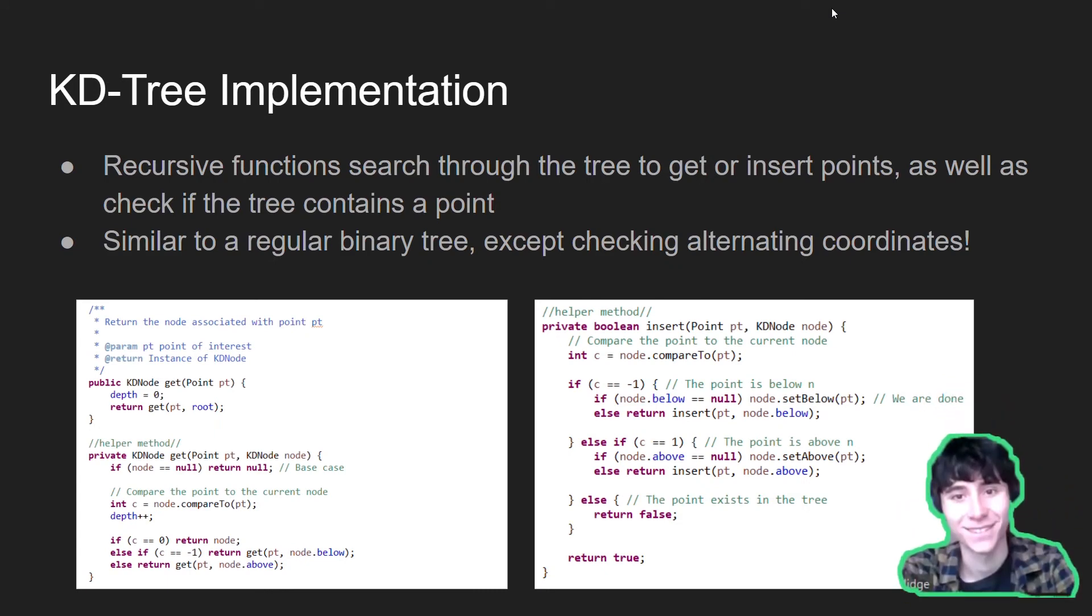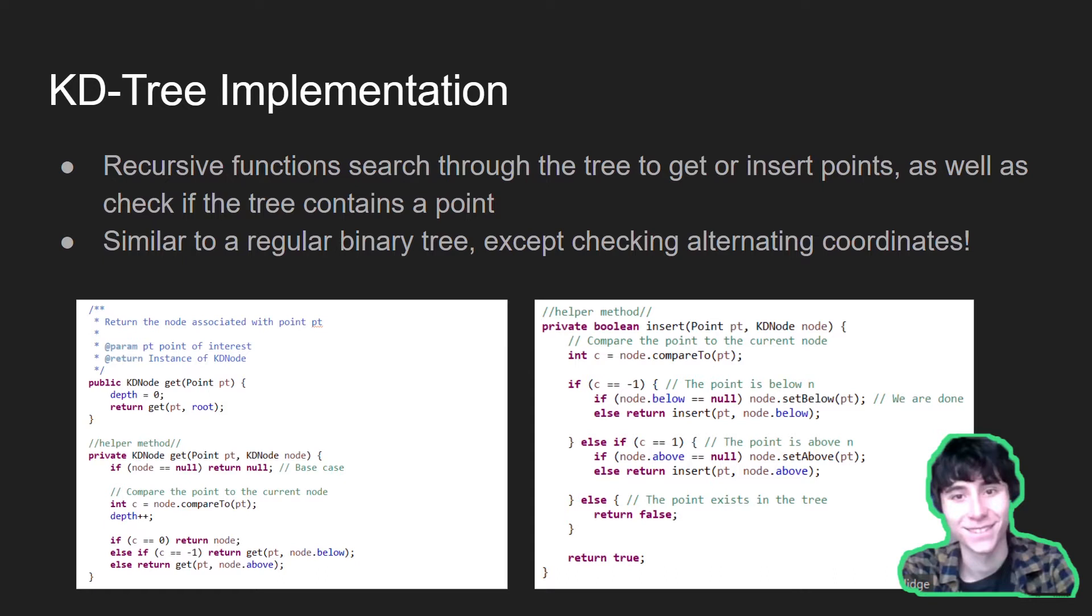Implementing our KD-tree turned out to be very similar to implementing a normal binary search tree. Just as in a regular binary search tree, the get, insert, and contains functions are recursive functions that will repeatedly search into the above or below subtree in order to find the correct location to either insert or access one of the points in the tree.